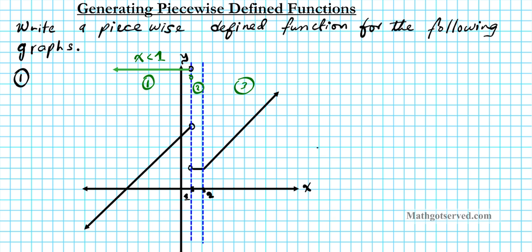In between for region two, we have an open circle here and an open circle here and everything in between, so we have a bounded region. For region two it's going to be the inequality: one is less than x and x is less than or equal to two — open on the left and included on the right because we don't have an open circle on the right. For region three, to the right of x equals two, the inequality is x is greater than or equal to two.